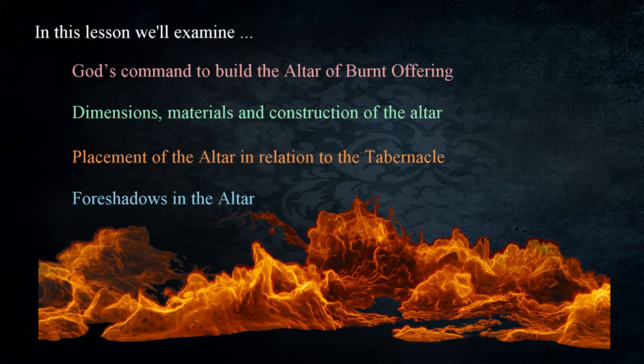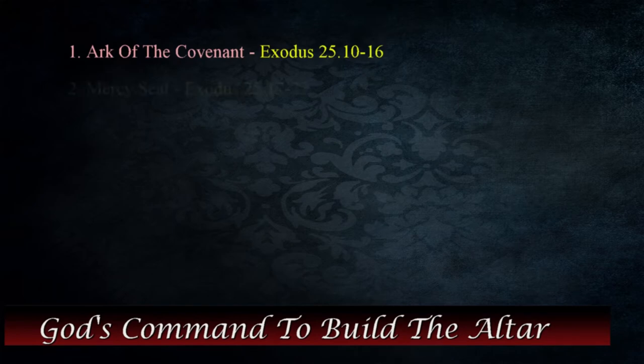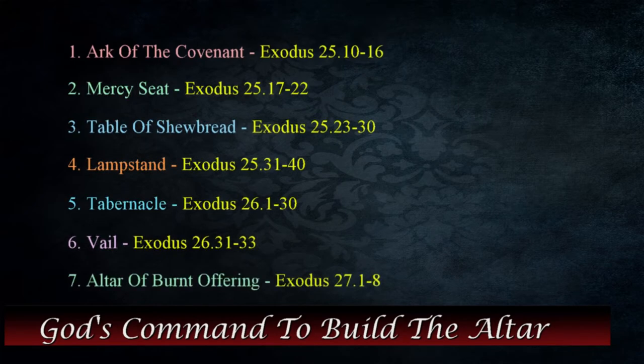In this lesson we'll examine: God's command to build the altar of burnt offering; dimensions, materials and construction of the altar; placement of the altar in relation to the tabernacle; and foreshadows in the altar. The altar of burnt offering appears seventh in Exodus 27:1 through 8, and details in the command to make the altar are simpler than for many of the other objects.